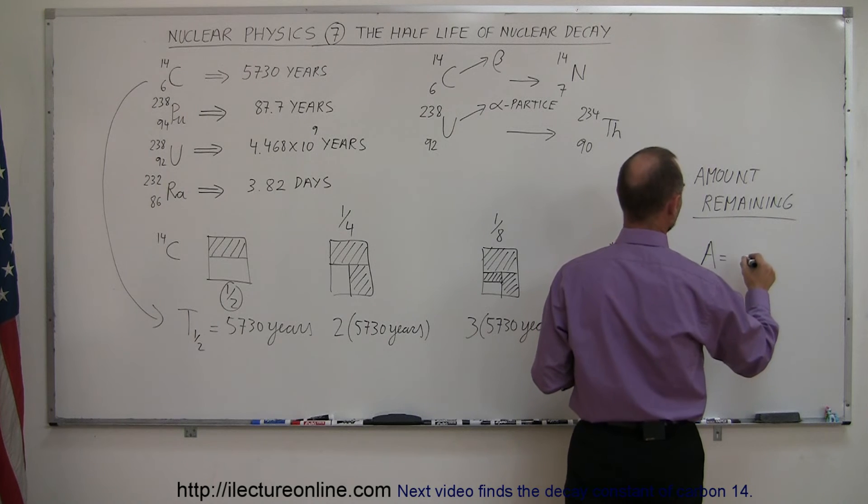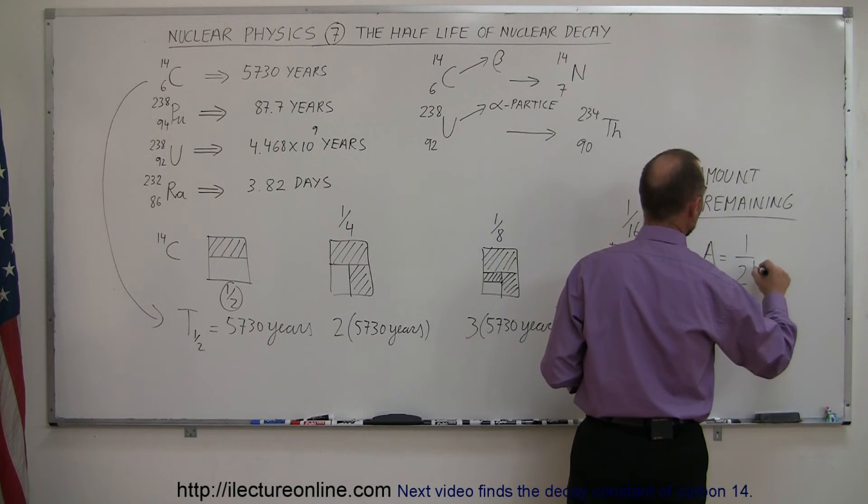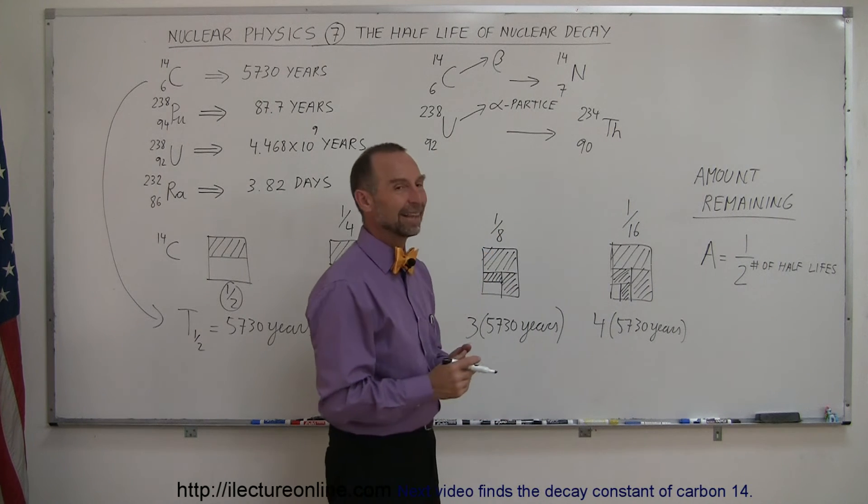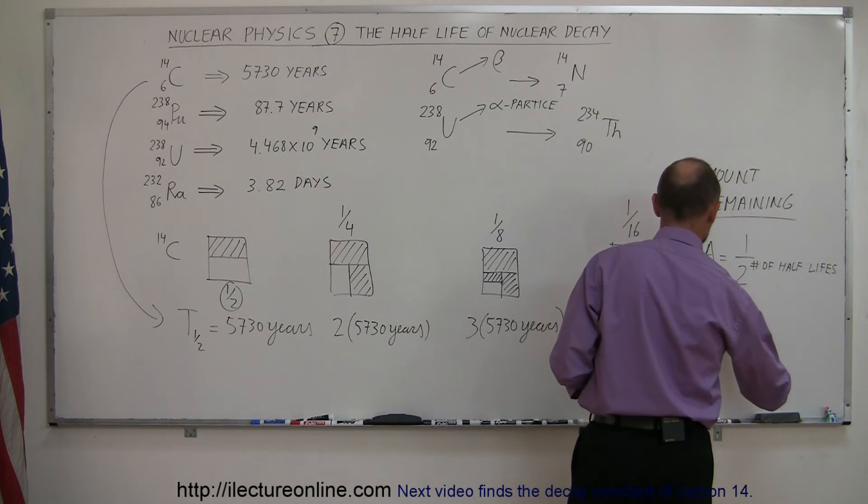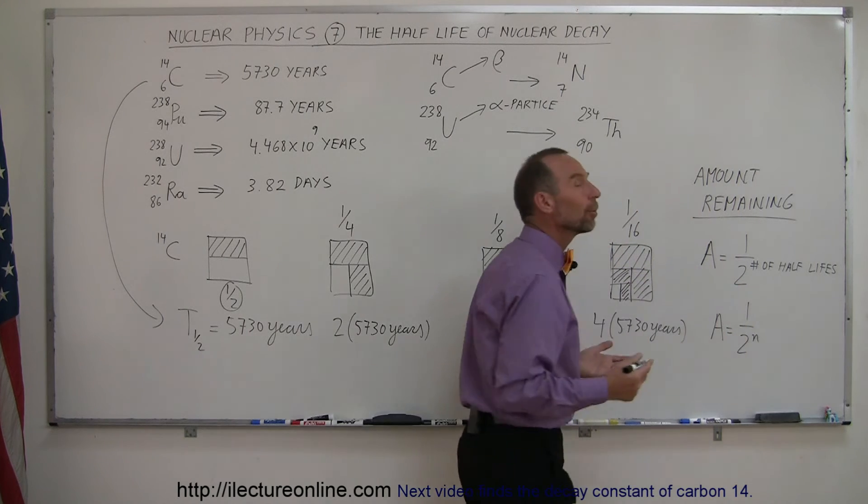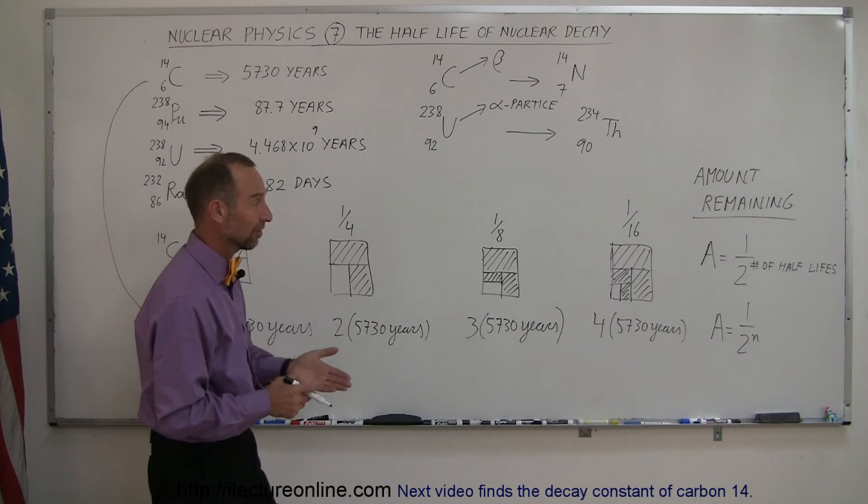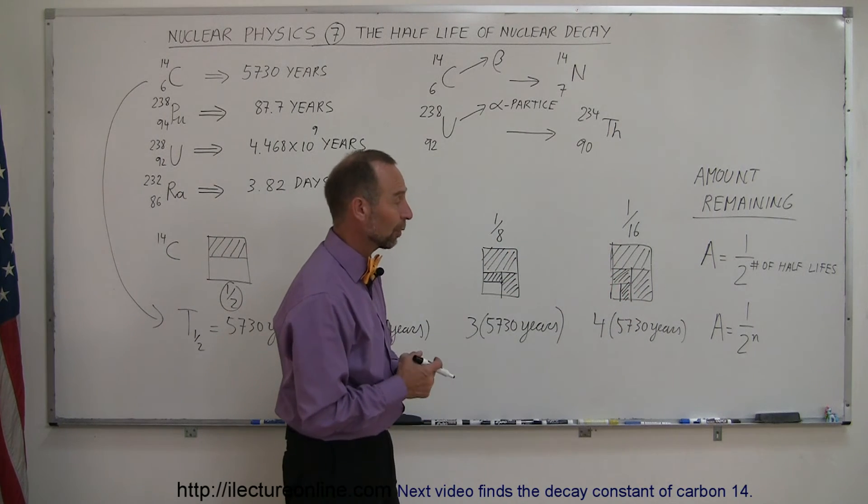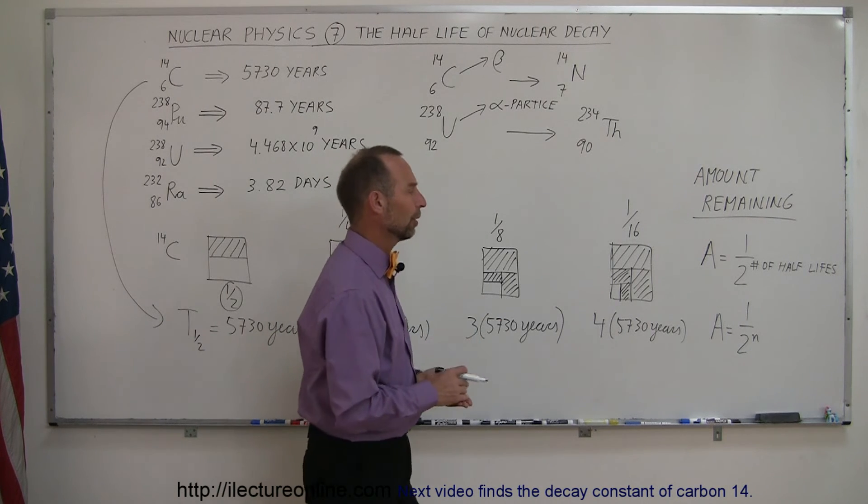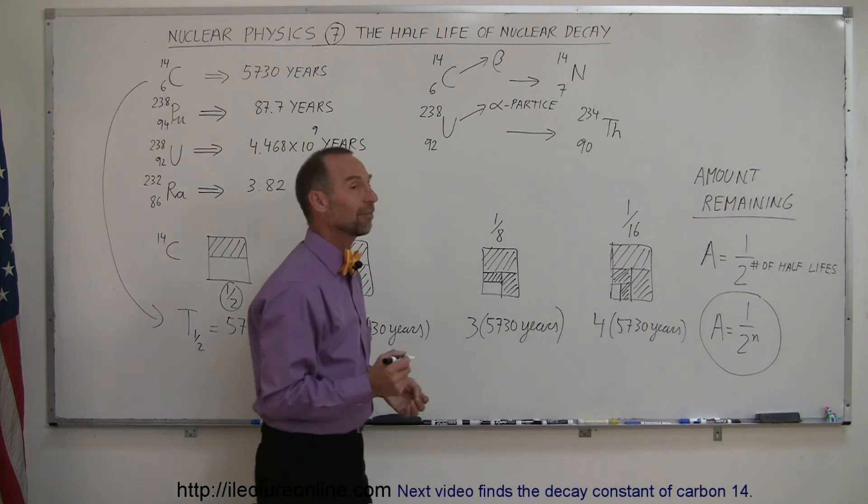Is equal to 1 over 2 to the number of half-lives. And of course, if you let that equal N, then you can say that the amount remaining A is equal to 1 over 2 to the N, where N is the number of half-lives. So if there's four half-lives, it's 1 over 2 to the fourth power, which is 1/16. Five half-lives, 1 over 2 to the fifth, is 1 over 32. And after six half-lives, 1 over 64, and so forth. So that's how you determine the amount remaining after a certain number of half-lives have elapsed.